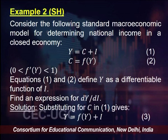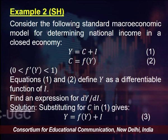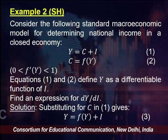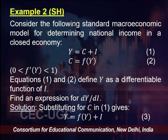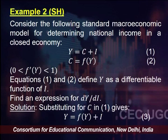C here represents private consumption expenditure and C is a function of Y. F prime of Y, which tells us how consumption changes with respect to income, represents the marginal propensity to consume as you must have studied in macroeconomics. The assumption here is that MPC is between 0 and 1, which is a reasonable assumption because as income increases, consumption also increases but by less than the increase in income.